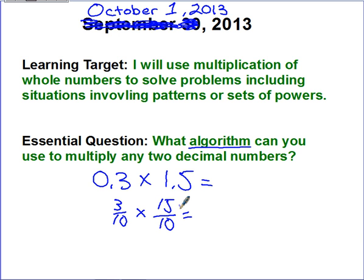And then multiply 3 times 15 is 45, and 10 times 10 is 100, and we know that 45 hundredths can be written as a decimal, 45 hundredths. So relatively simple, but there is an algorithm that we can use to where we don't even have to go to the fractions.